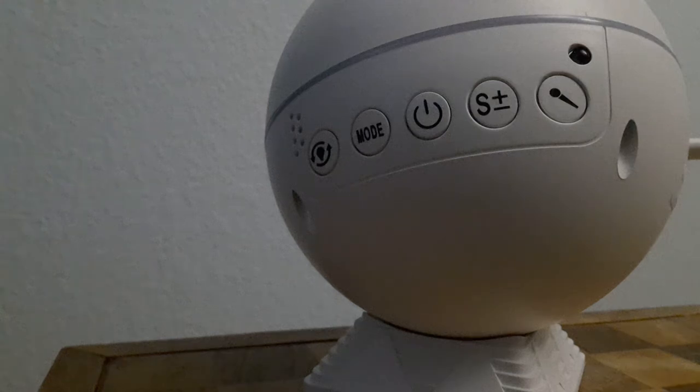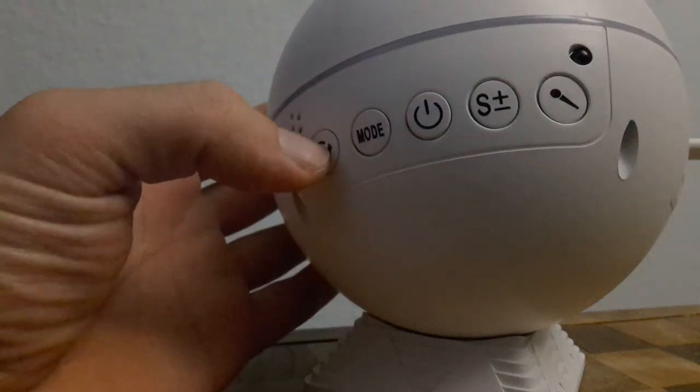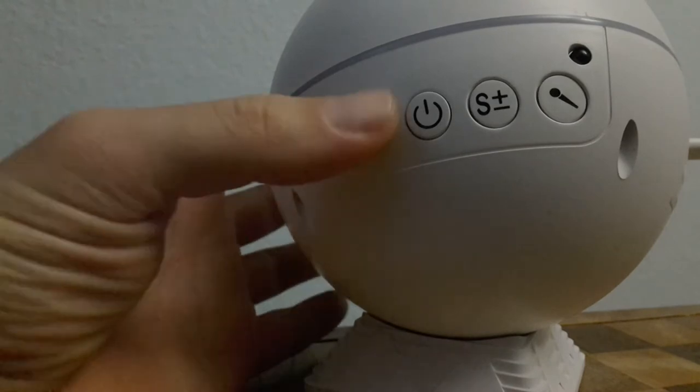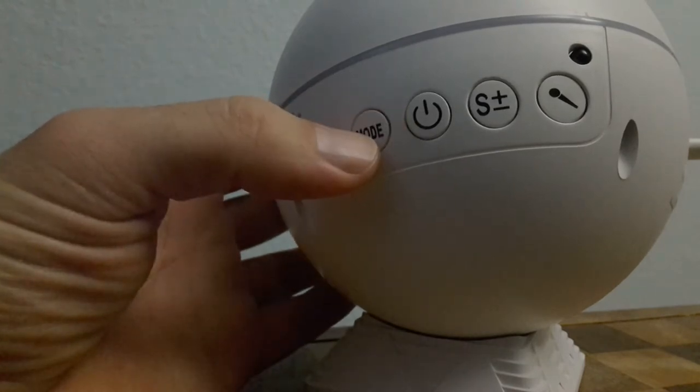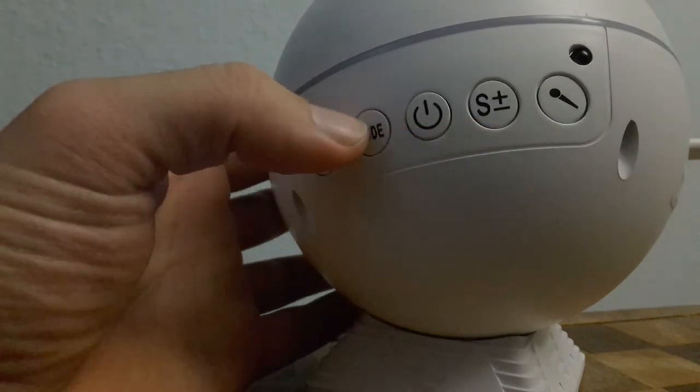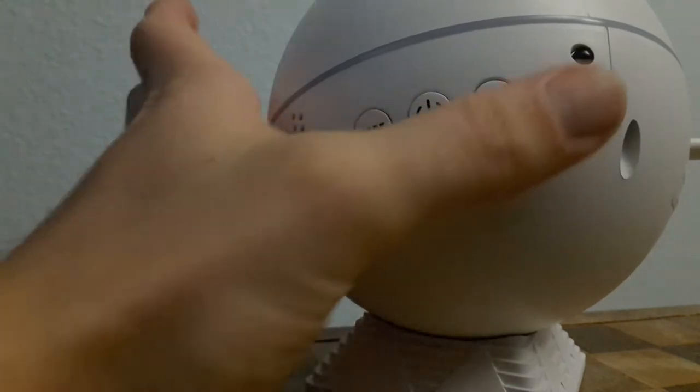So this projector has some buttons on it. You've got a mode switch for the lighting, a mode switch for the LEDs and animations, then you've got power and animation, and then there's an audio mode.